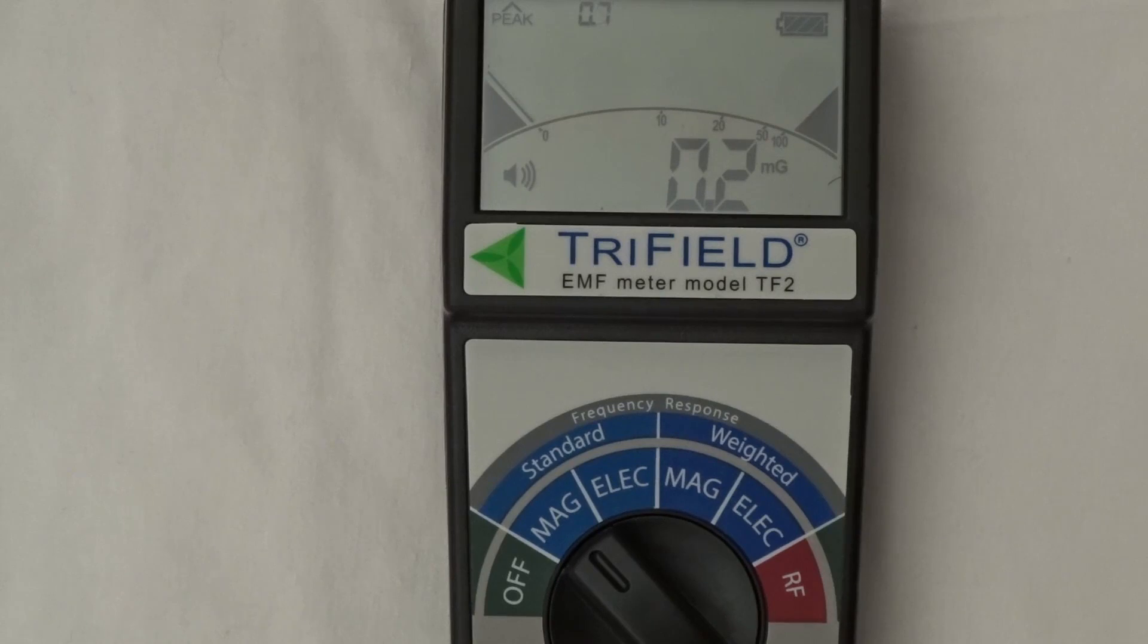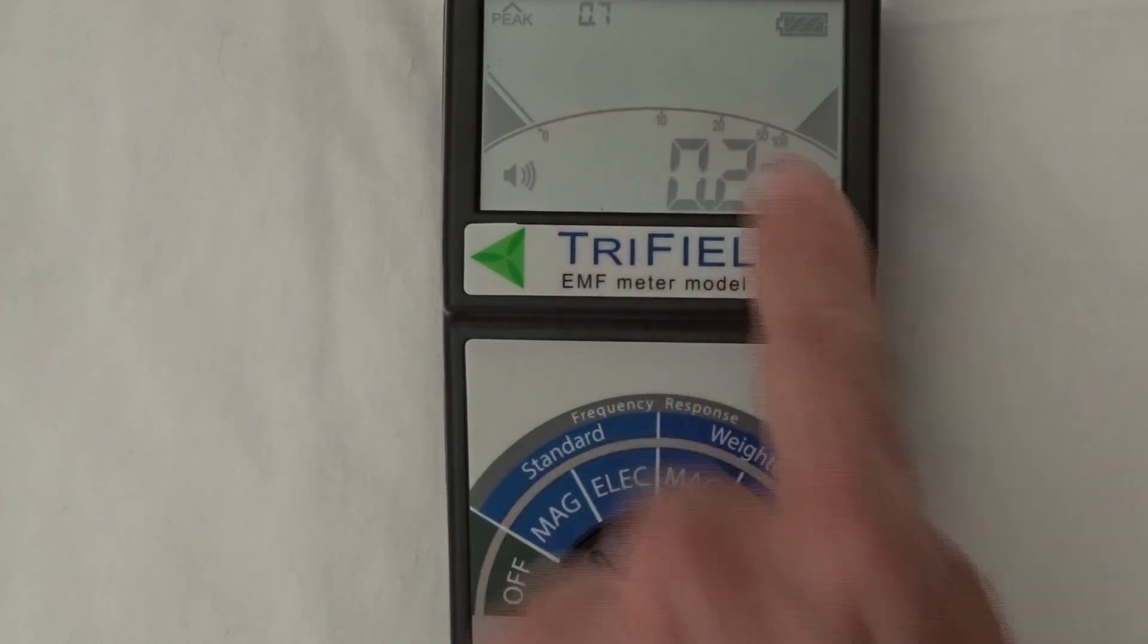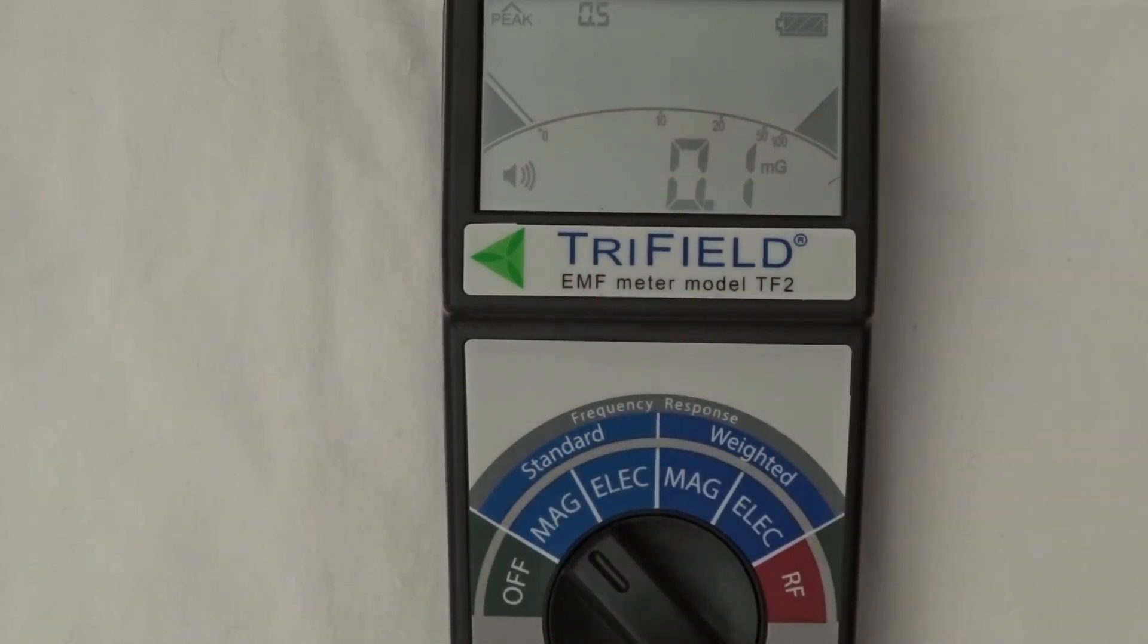Above that is a bar graph here, which gives us the reading, the same reading in a bar form on a scale of 0 to 100.